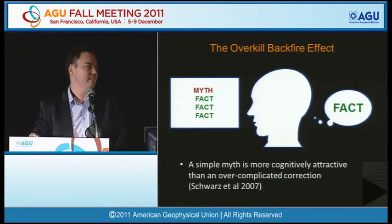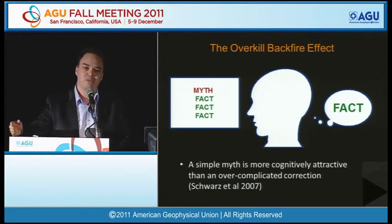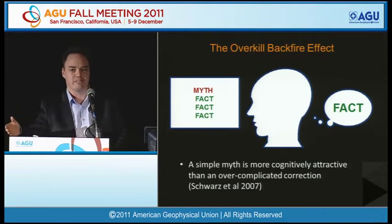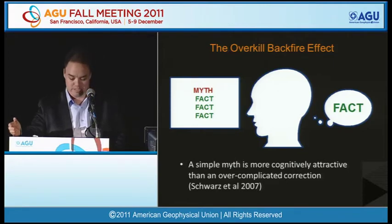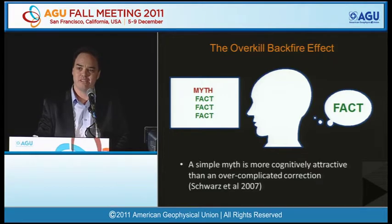The solution is to not overload the reader with too much information. The same experiment found that when they presented just three arguments against the myth, they successfully reduced the influence of the misinformation. So when it comes to refuting misinformation, less is often more.